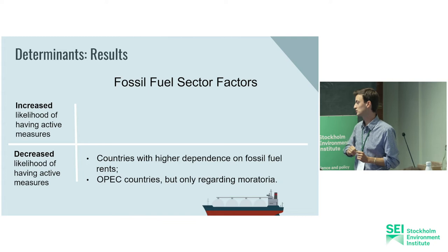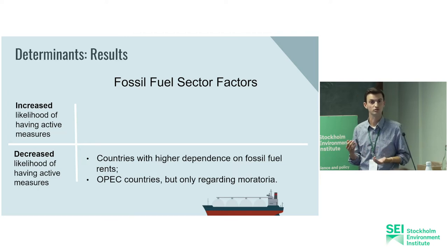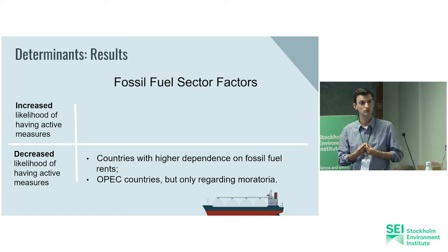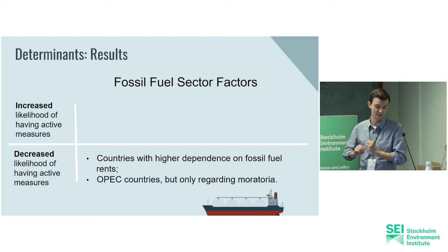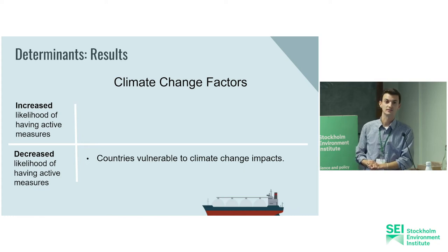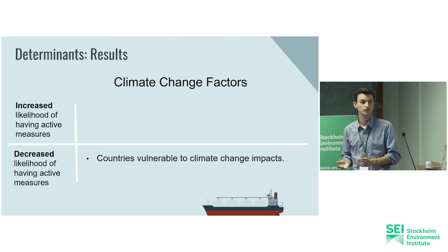For fossil fuel factors: countries with a higher dependence on fossil fuel revenue are less likely to have active measures. The same goes for active OPEC countries concerning moratoria specifically, which has interesting implications for coalition building. We have also noted that the size of fossil fuel reserves and the scale of production does not have a strong impact either way — also a very interesting finding for coalition building. And countries vulnerable to climate change impacts are less likely to have an active measure. Countries with bigger populations are more likely to have active measures.